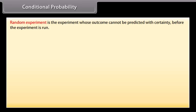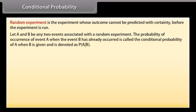Conditional Probability. A random experiment is one whose outcome cannot be predicted with certainty before the experiment is run. Let A and B be any two events associated with a random experiment. The probability of occurrence of event A when event B has already occurred is called the conditional probability of A given B.